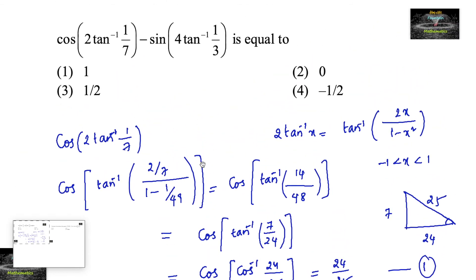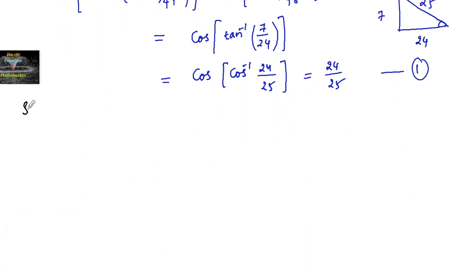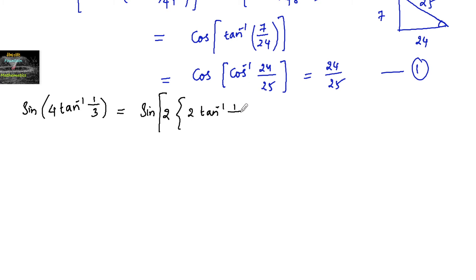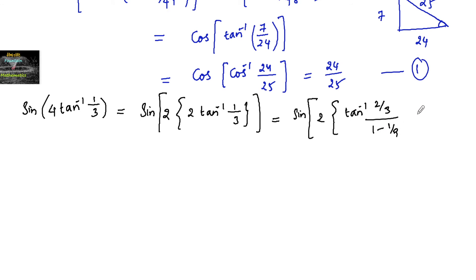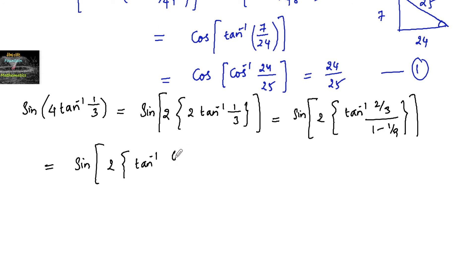Now consider the second part: sin(4·tan⁻¹(1/3)) = sin(2·(2·tan⁻¹(1/3))). Applying the formula 2x/(1−x²) with x = 1/3 gives 2·tan⁻¹(1/3) = tan⁻¹((2/3)/(1−1/9)) = tan⁻¹(3/4). So we have sin(2·tan⁻¹(3/4)).